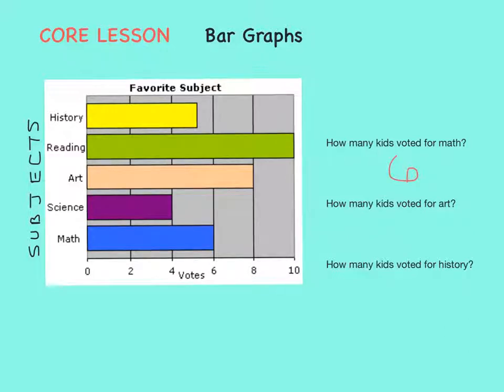What about art? Well, first we find art on the bar graph. Here it is. It has a tan bar right here and it goes all the way to the line that represents eight votes. So eight people voted art as the best subject.